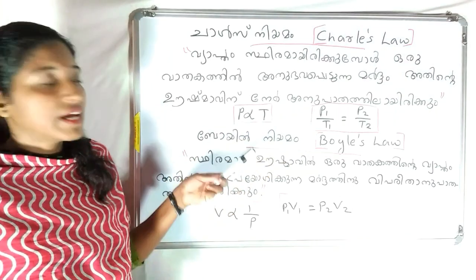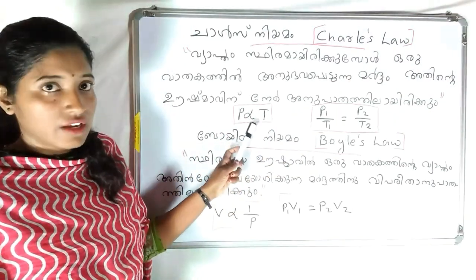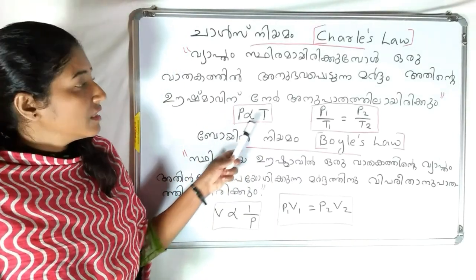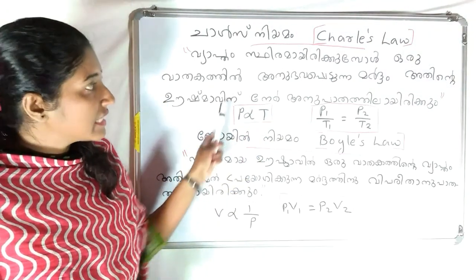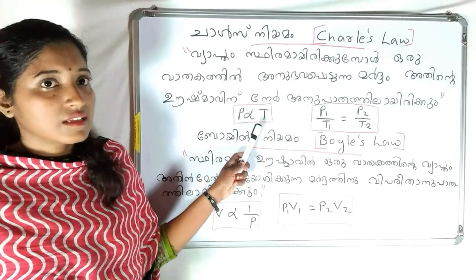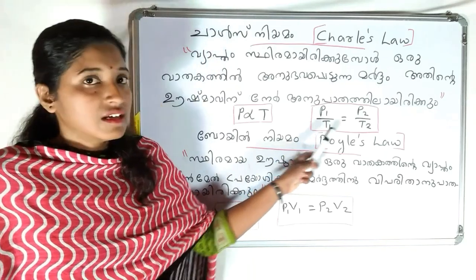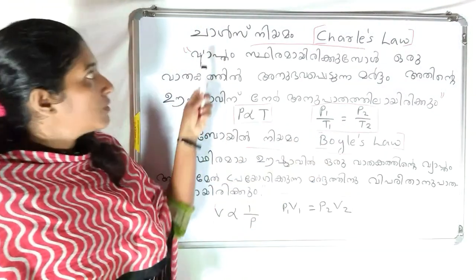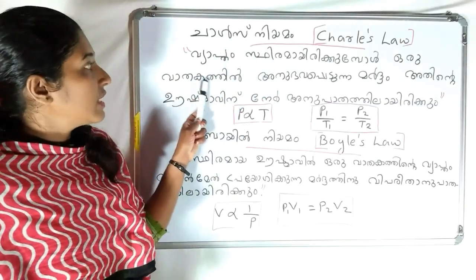P is proportional to T. We are going to talk about P — P is pressure and T is temperature. N is proportional to T. P1 by T1 is equal to P2 by T2 — this is Charles's Law.